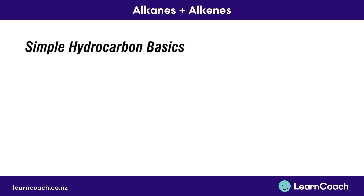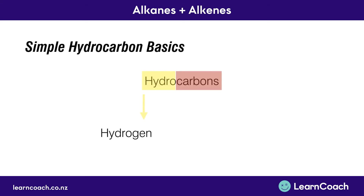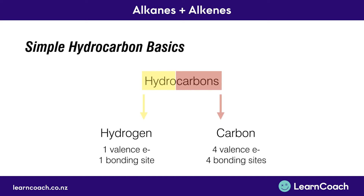We'll start by talking about the simple hydrocarbon basics. The word hydrocarbon is made up of two parts: hydro, which means hydrogen, and carbon, which obviously just means carbon. From our first video in the series, we said that hydrogen has one valence electron and one valence site, whereas carbon has four valence electrons and four bonding sites.